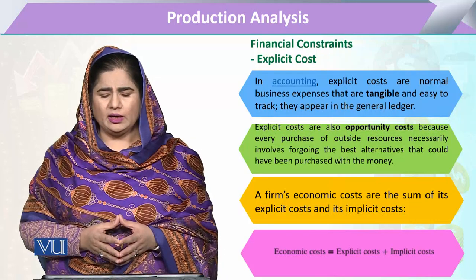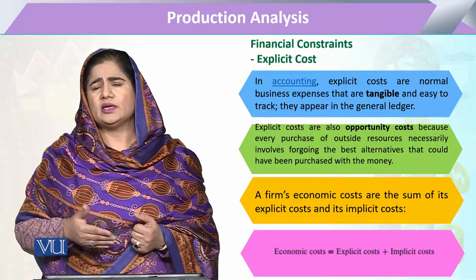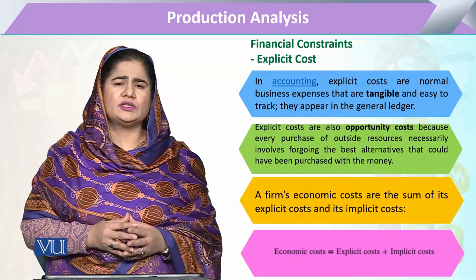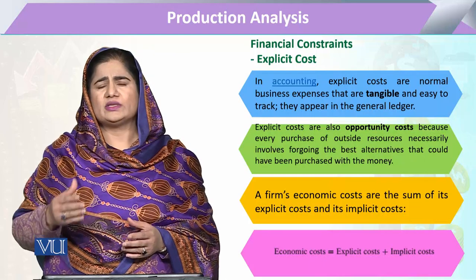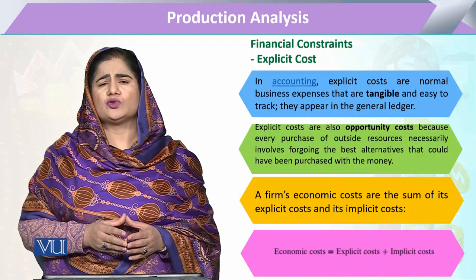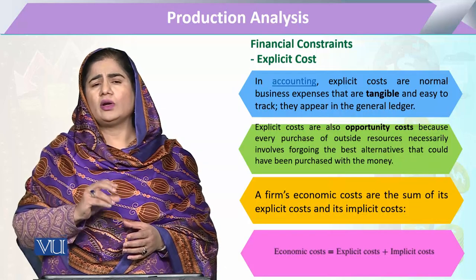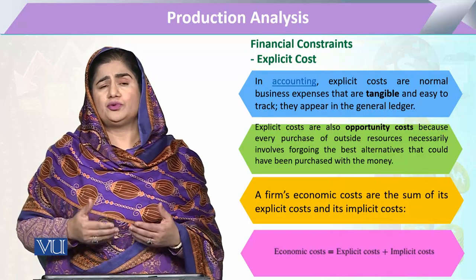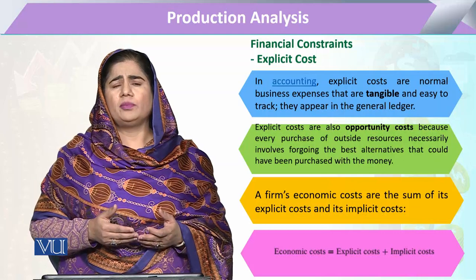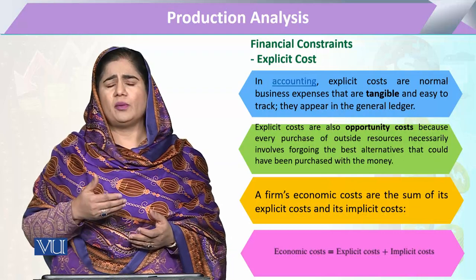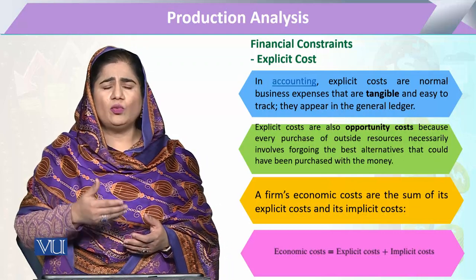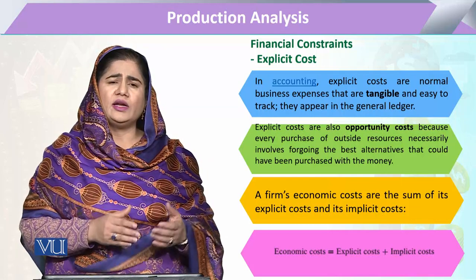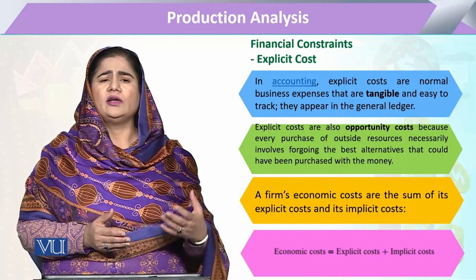Generally, the implicit costs relate to the opportunity cost of a system. Even the explicit cost of a system, in one form or another, also possesses an opportunity cost. What is the opportunity cost of a system? It also has an alternative value or an alternative resource — meaning that money could potentially be used elsewhere by a system.